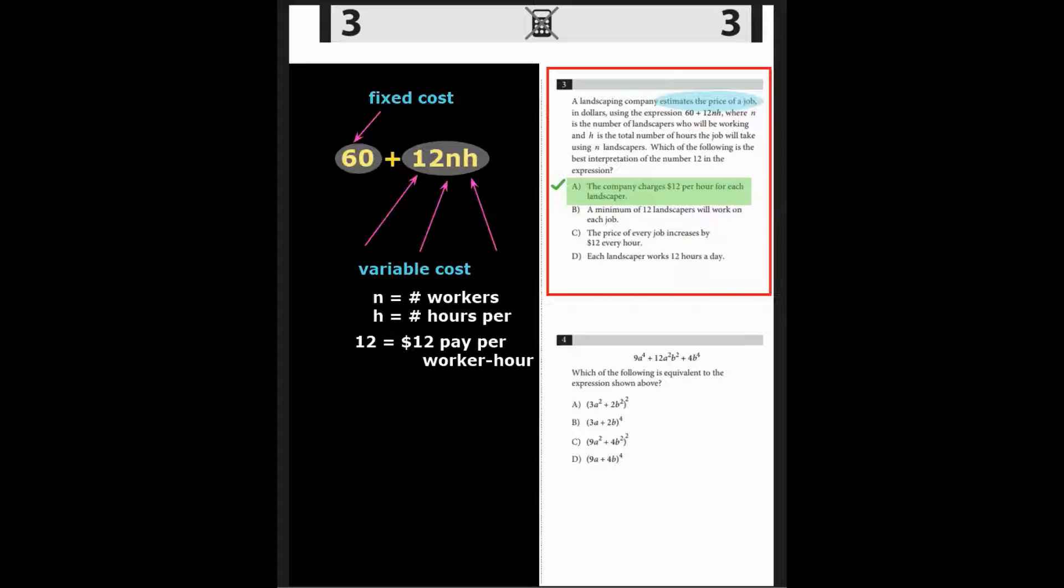12 will be the pay per hour for each landscape worker. So the correct answer is A, the company charges $12 per hour for each landscaper.